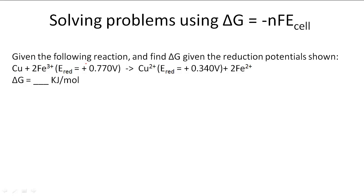In this problem, given the following reaction, find the standard free energy change given the reduction potentials shown. We have: Cu plus 2 Fe3+, with E_reduction equals 0.770 V, yielding Cu2+ with a reduction potential of 0.340 V, plus 2 Fe.